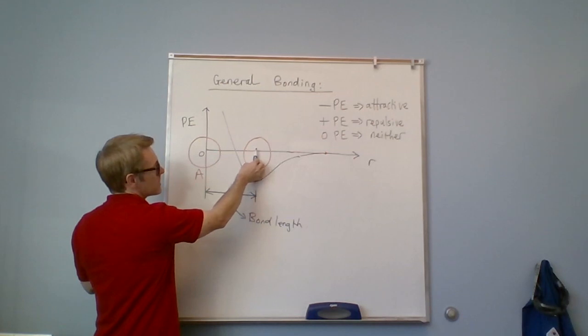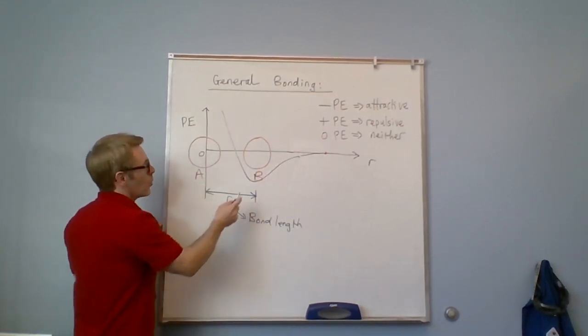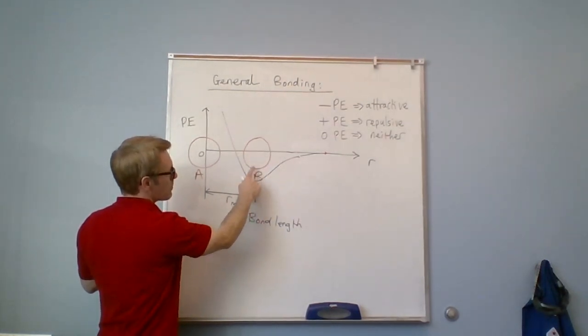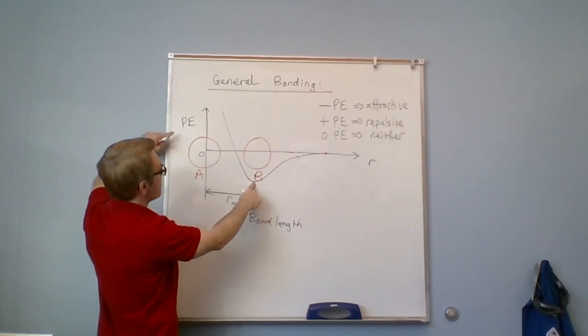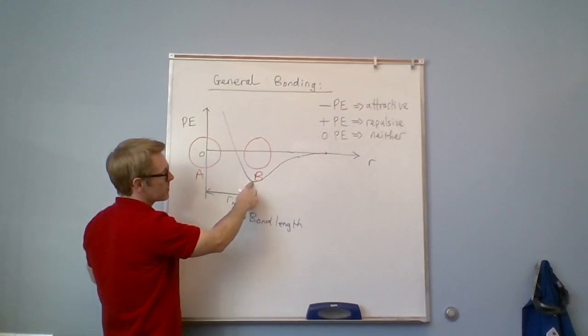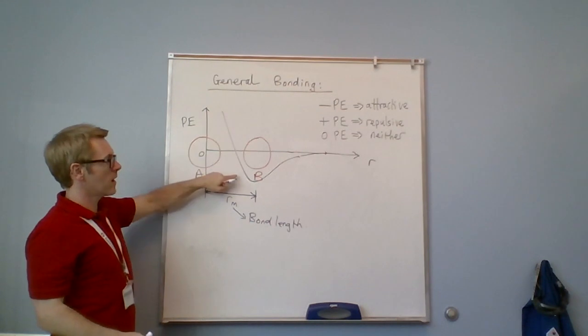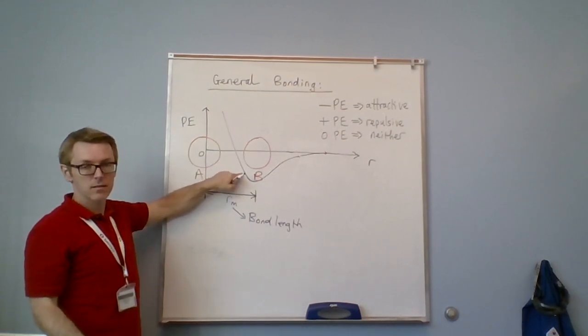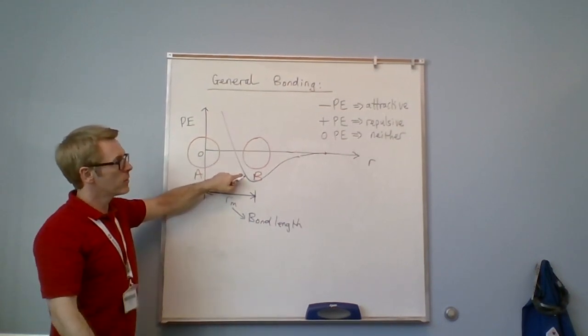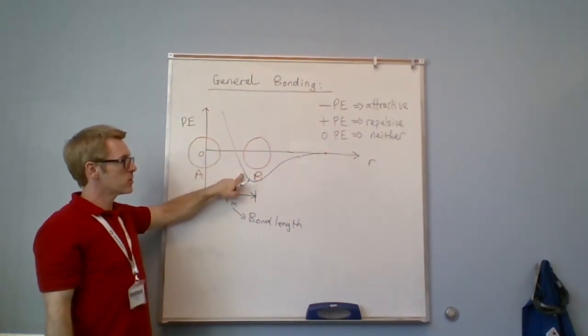Now what happens if I try and make the bond length a bit shorter? Well if I'm here, if I'm right in the middle here and I'm sat right at the bottom of this well at my maximum negative value, then if I move slightly to the left I'm going to become less negative as I move in a positive direction. Well if you move in a positive direction that's repulsive, so as soon as you do that you're just going to go back down again.